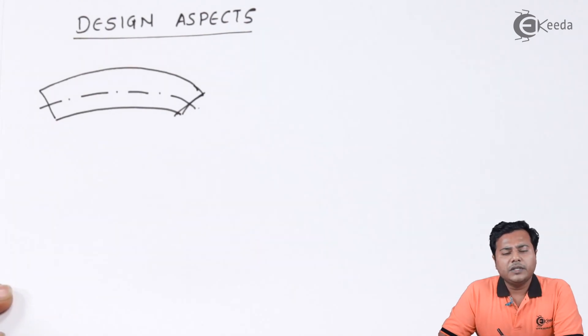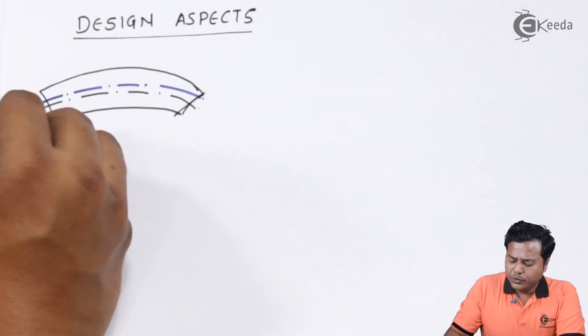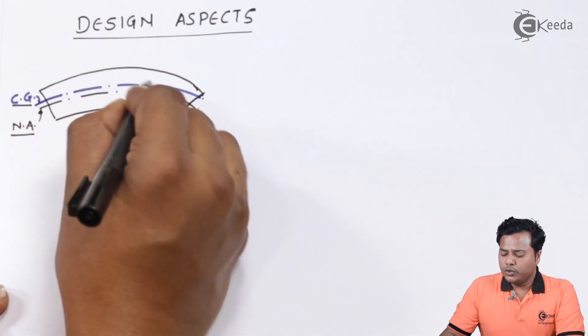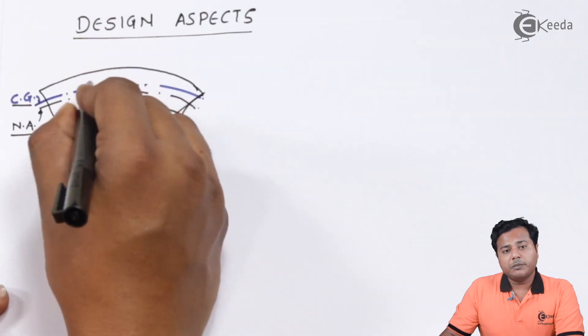As we know, curved beams are different in the manner that the centroidal axis and the neutral axis don't coincide. So the lower one I have shown is its neutral axis and the upper one is the centroidal axis. As we bend something, the mass has a tendency to move towards the larger radius, and that's why the mass is moved towards the larger radius of that particular bond.